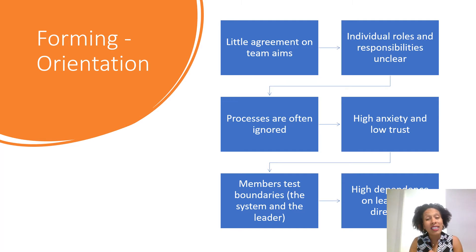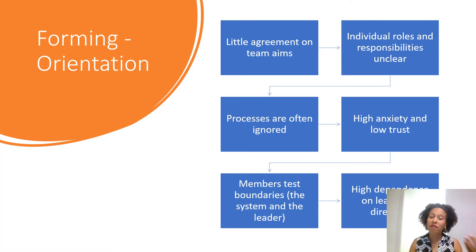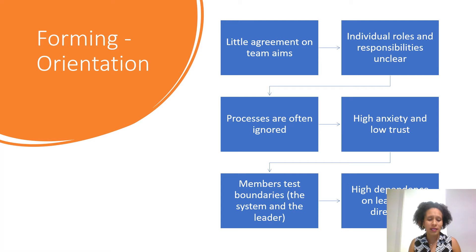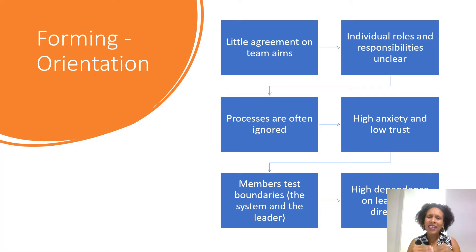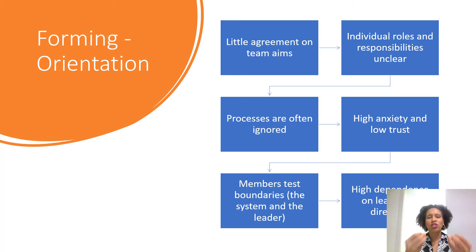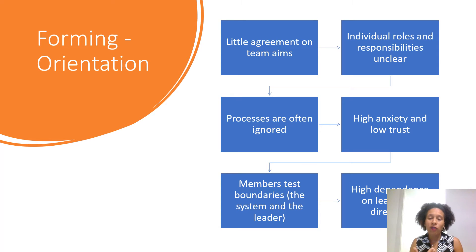The leader is being looked to for direction — where do we go, what are we supposed to be doing, why are we here together? So the leader needs to be direct and provide guidance on the purpose of the team, clarity on the values the team will need to espouse to achieve the goals, what the norms are, what the expected behavior is, what the processes are for decision making and communication. It has to be very directive at the onset in terms of procedures, accountability practices, roles, and responsibilities.